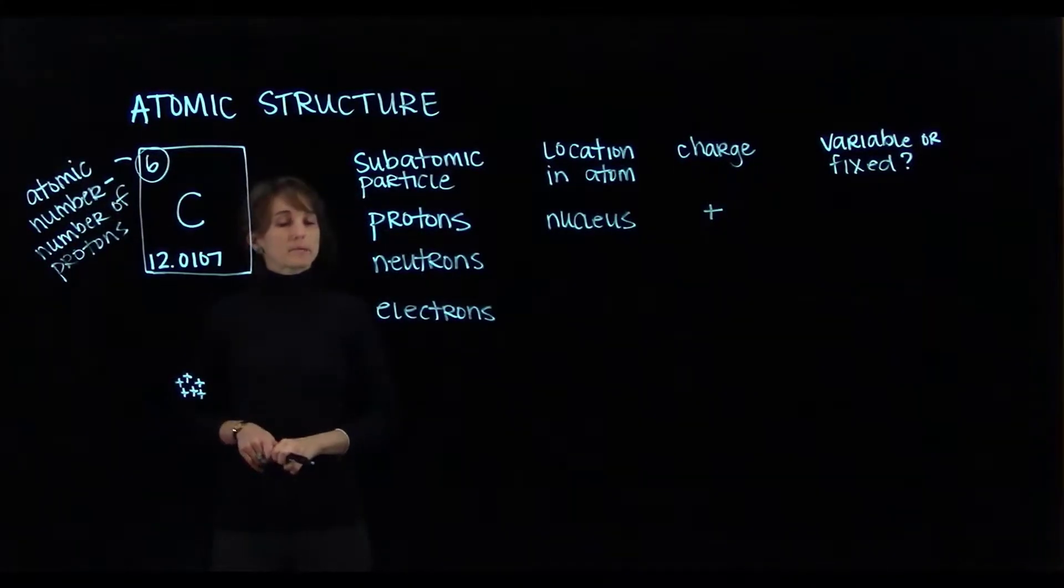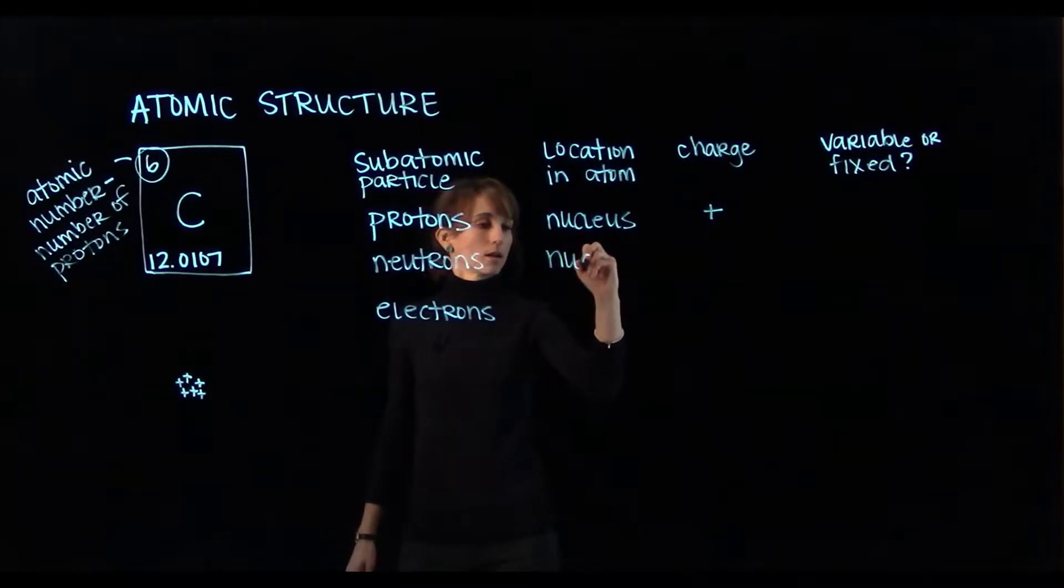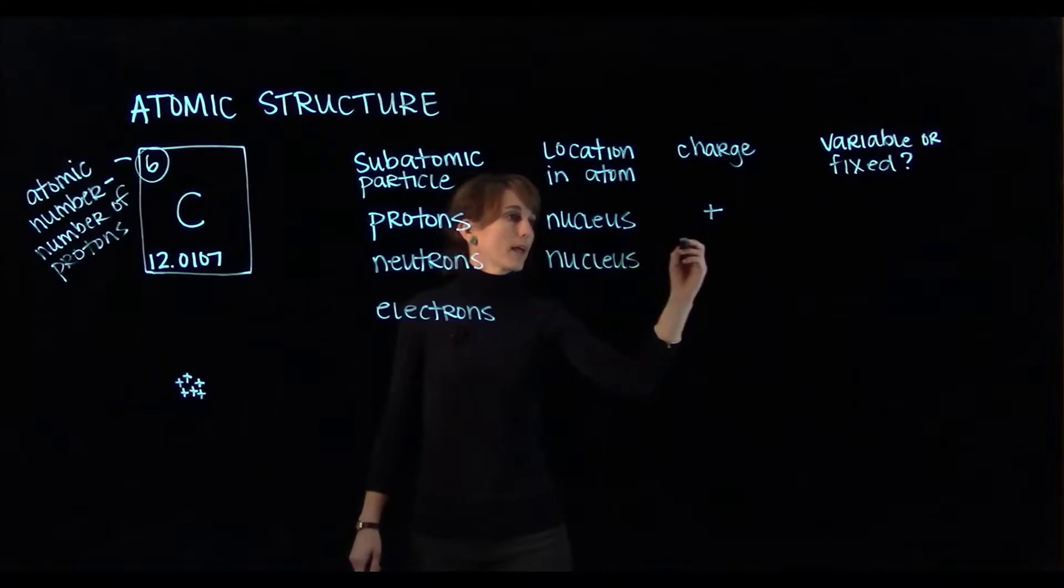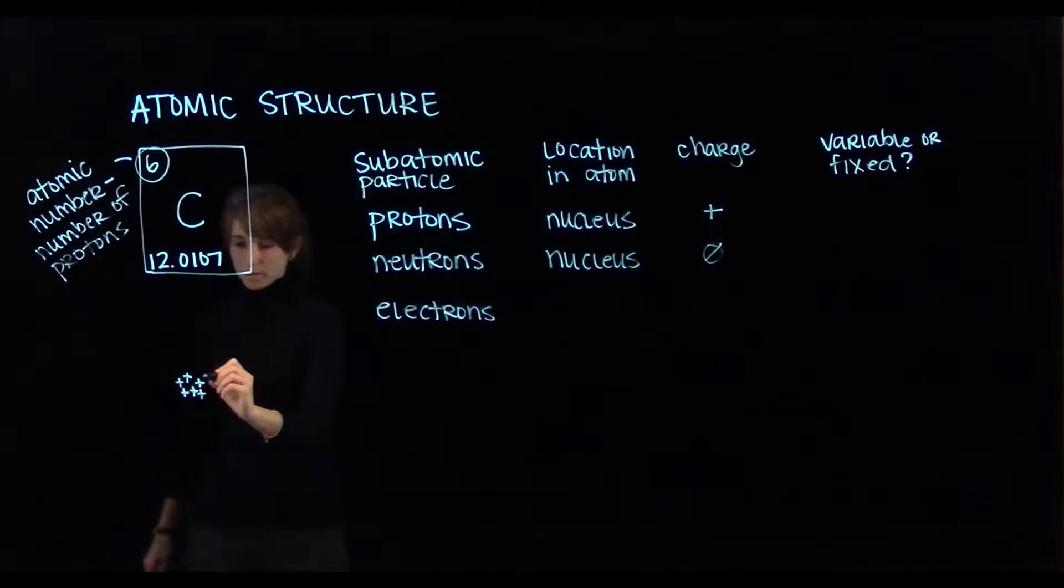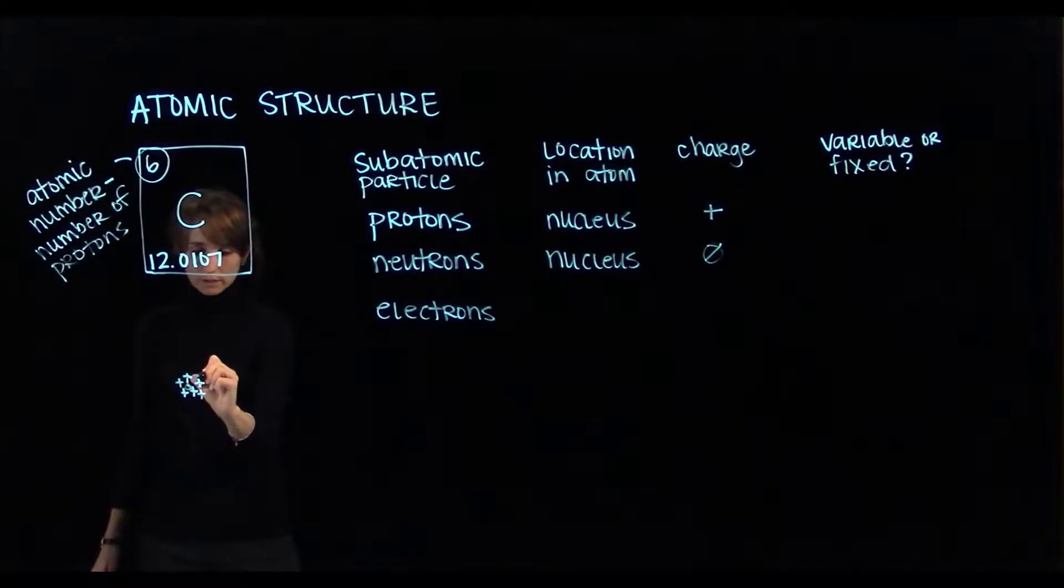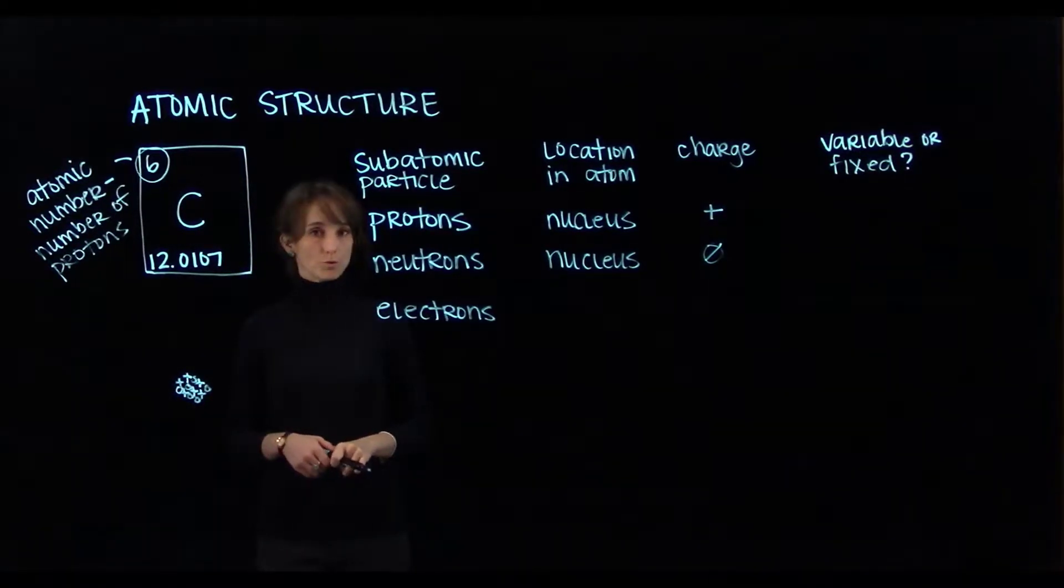The next type of subatomic particle is the neutron. Neutrons are located in the nucleus with the protons, but they have a neutral charge. So we can draw those in our atom by just drawing little circles, and I am going to draw six of them to represent six neutrons.